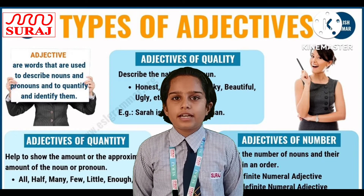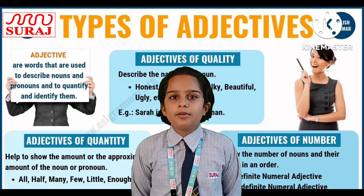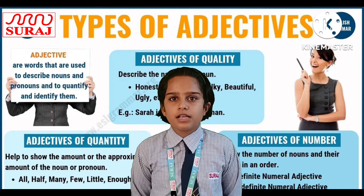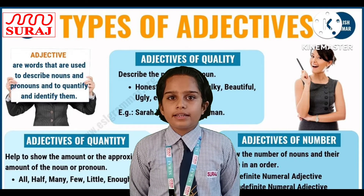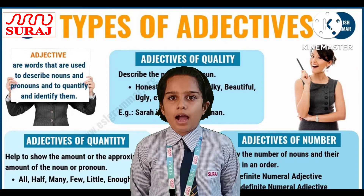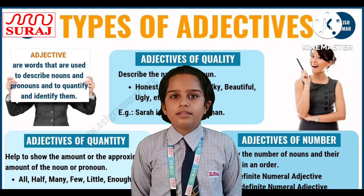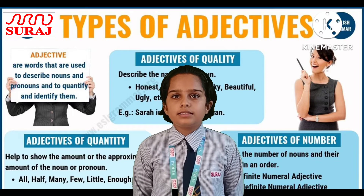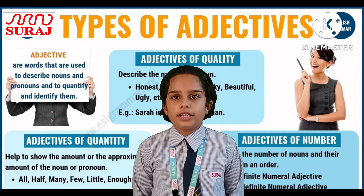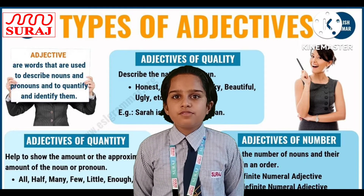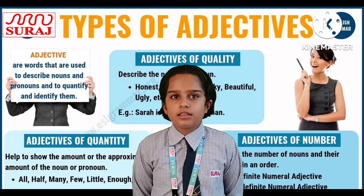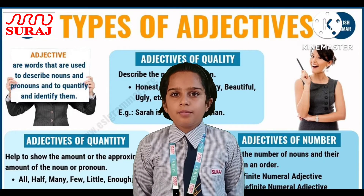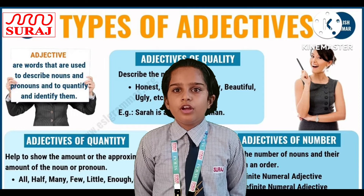Fourth, demonstrative adjective. A demonstrative adjective points out some person or a thing. Example: that ticket is my cousin's — 'that' is the demonstrative adjective. These flowers are very beautiful — 'these' is the demonstrative adjective.